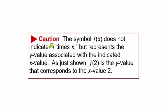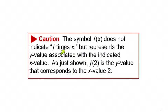Here is a caution note. This is something that a lot of people misunderstand: the symbol f of x does not indicate f times x. It represents the y value associated with the indicated x value. For example, f of 2 is the y value that corresponds to the x value 2. Just remember that even though we see parentheses here, it doesn't mean f times x.